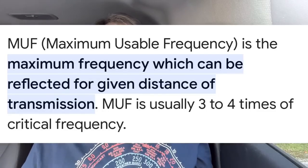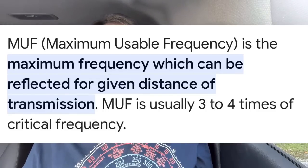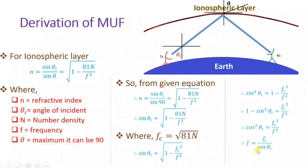So what is the maximum usable frequency, or MUF? MUF is the highest frequency that can be used between two points on earth. There's a lot of videos on YouTube explaining MUF, but just like everything else in ham radio, it's overcomplicated. I want to simplify it and really talk about it.